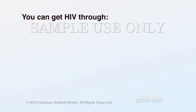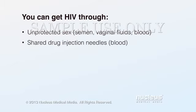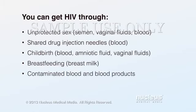HIV passes from person to person through infected body fluids. HIV can enter your body during unprotected sex, while sharing drug injection needles, during your own childbirth, while breastfeeding from your mother, or from contaminated blood or blood products.